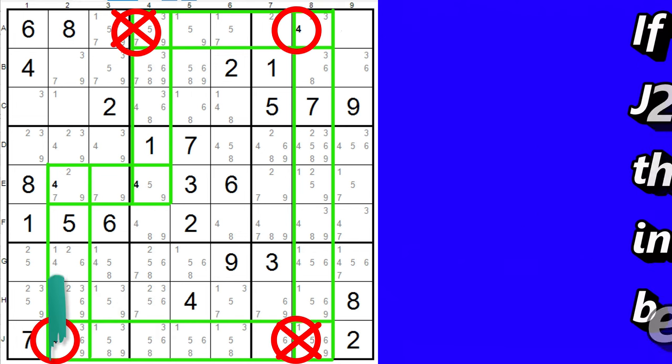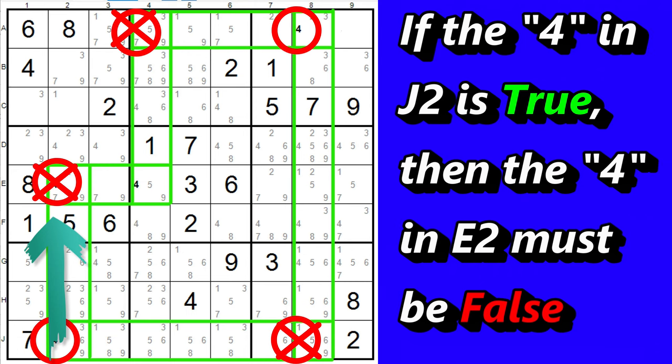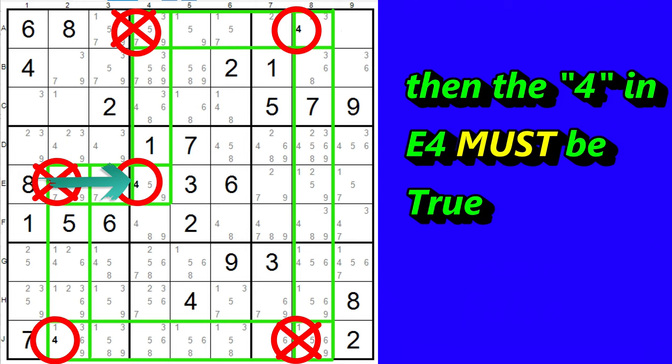So the 4 in row J must be this one in column 2. Now, if that's true, then this 4 in row E, column 2, cannot be the 4. And therefore, this is the 4 in row E, column 4.